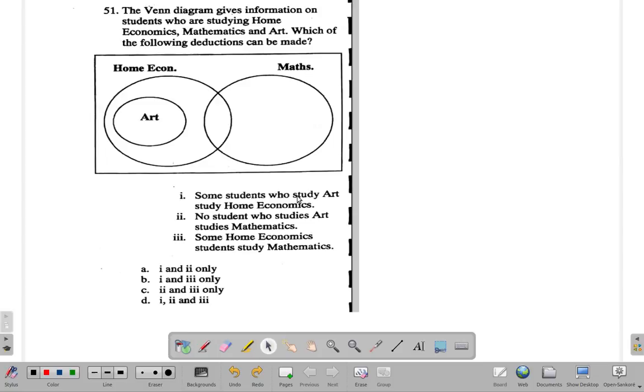Some who study art study home economics. All right, let's imagine that they are using the ordinary everyday language and assume that when you say some, if it's all of them, then you're wrong.